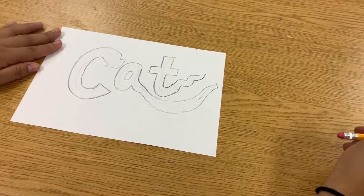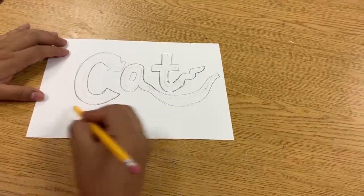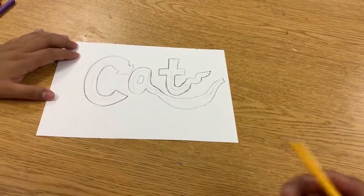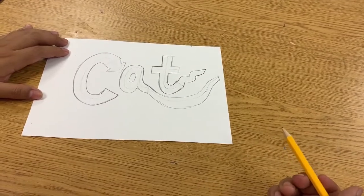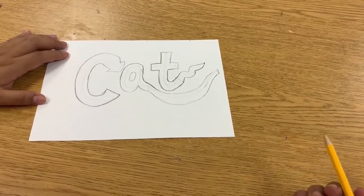Now, you can add other designs if you want to, like something coming underneath, and you'll just use that exact same technique. Draw the single line first, and then draw the two lines to outline it.